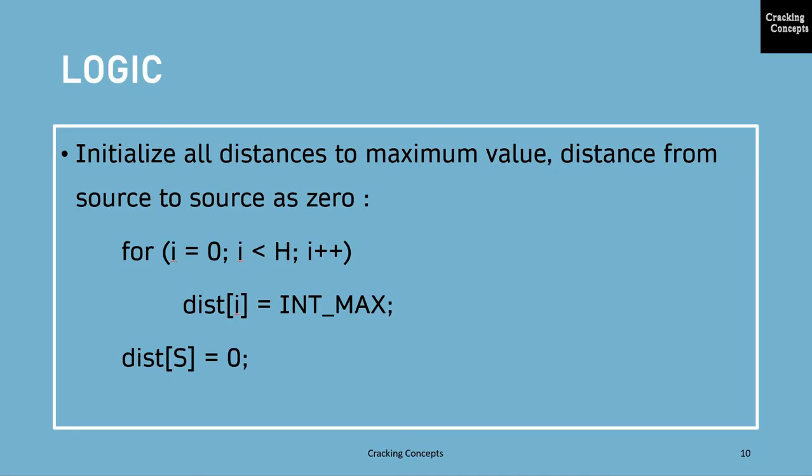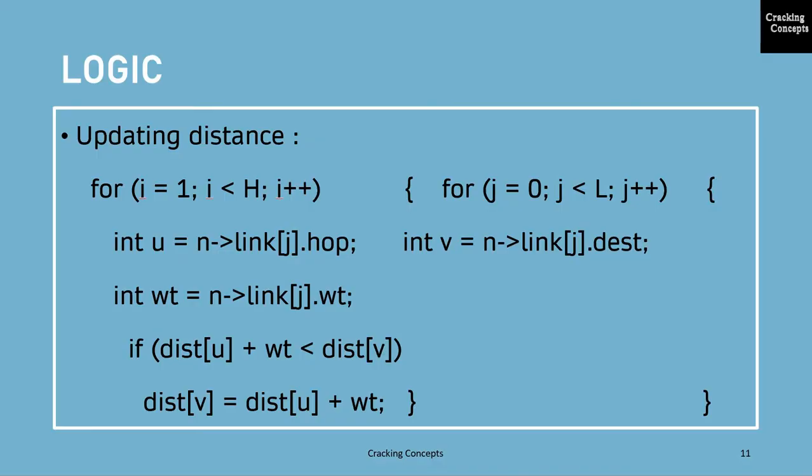After that, all the distances will be initialized to a maximum value and the distance from the source to itself will be set as 0. Now in C, there is a macro known as intmax. So what it does is it is a macro that is setting a particular variable in such a way that it cannot have a higher value than intmax. For this, header files like limits.h and stdlib.h can be included. Now the value of intmax will vary from compiler to compiler. This process of setting each of the distances to the max value is done using a loop in which the number of hops is set as the limit. Similarly, the distance from source to itself will be set as 0.